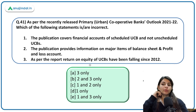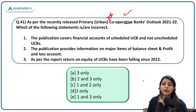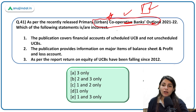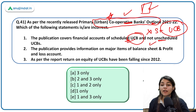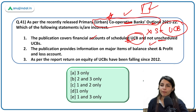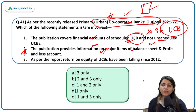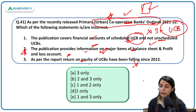About the Primary Urban Cooperative Banks Outlook: the publication covers financial accounts of scheduled urban cooperative banks only — incorrect; it covers both scheduled and unscheduled urban cooperative banks. The publication provides information on major items of balance sheet and profit and loss account — correct, that is its actual purpose. As per the report, return on equity of UCBs has been falling — incorrect; return on equity has increased. Net interest margin has also increased.